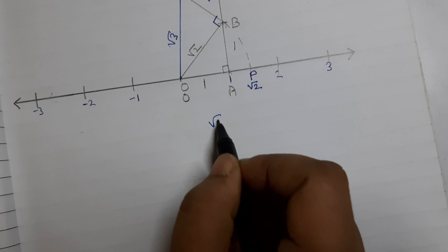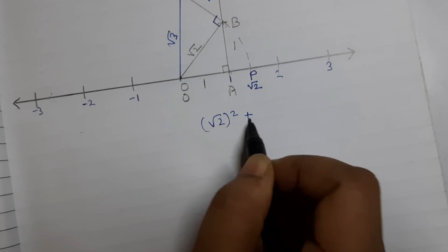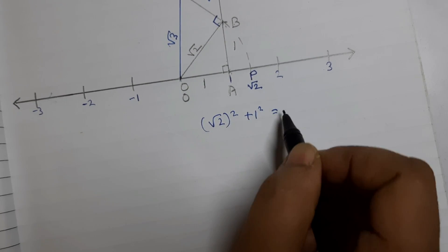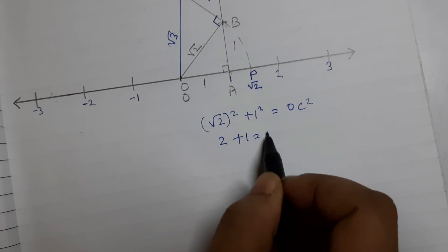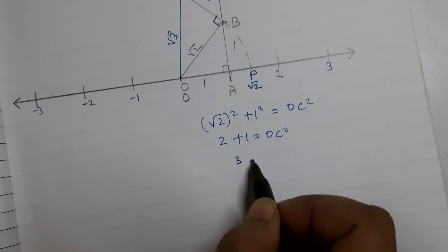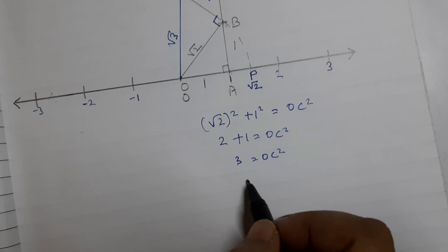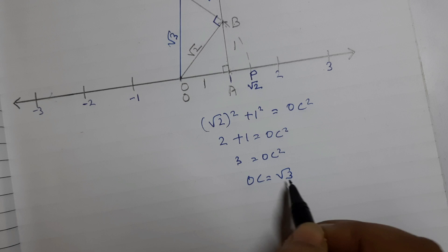So, square root of 2 squared plus 1 squared is equal to O, C squared. So, this is 2 plus 1, which is 3 equals to O, C squared or O, C is equal to square root of 3.